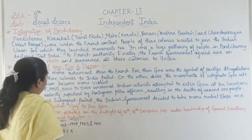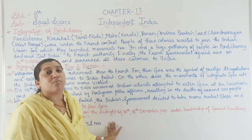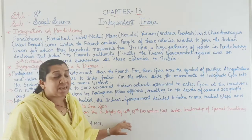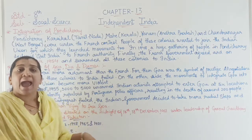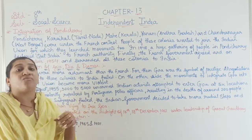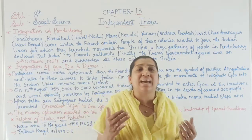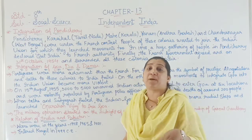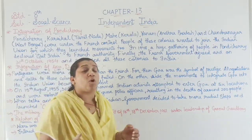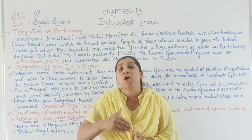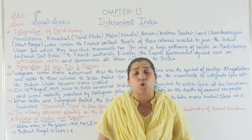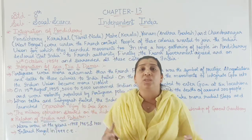The military operation started at midnight of 17th December, and by noon of 18th December 1961, Goa was freed from the hands of the Portuguese under the leadership of General Chaudhuri. After freeing Goa, the Indian flag was raised over the territory. Diu, Daman, and Goa were thus released from Portuguese rule through Operation Vijay. Goa later became a state, and Diu and Daman became union territories of India.